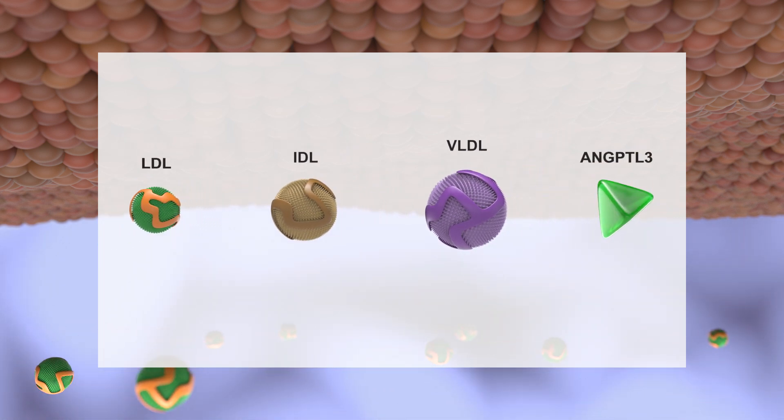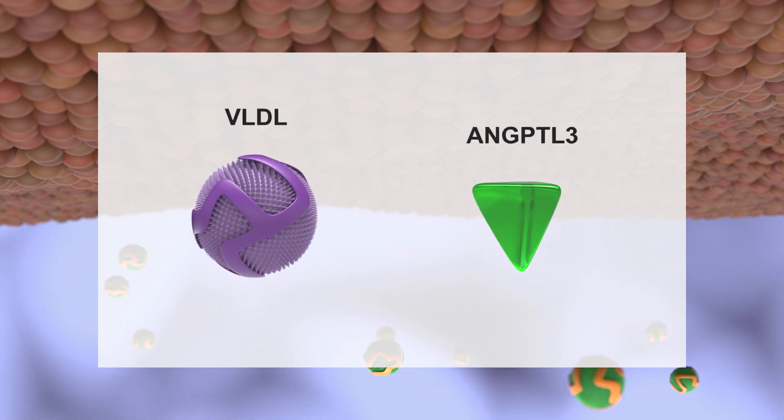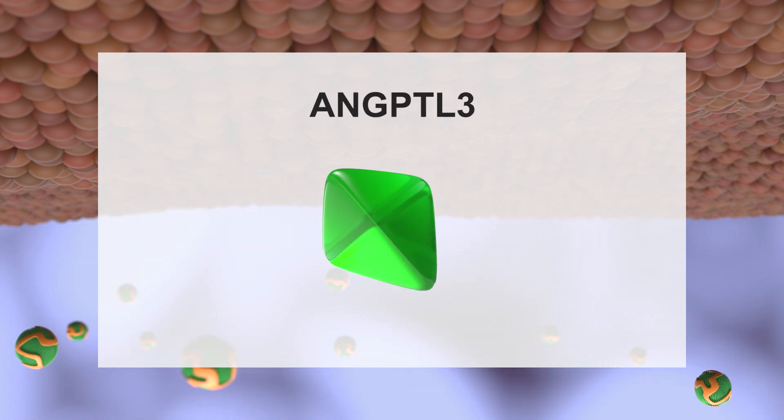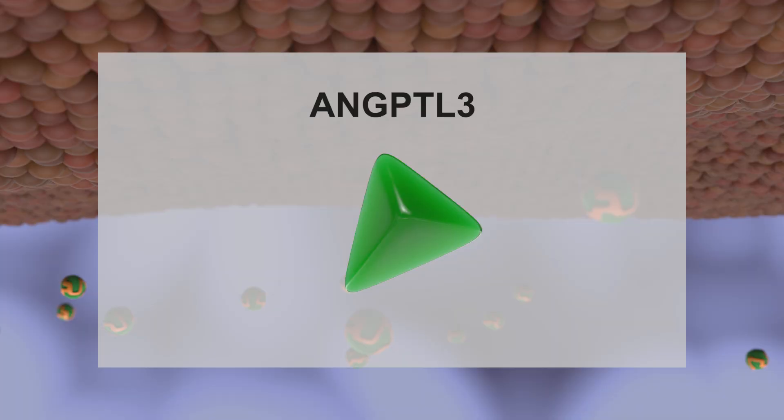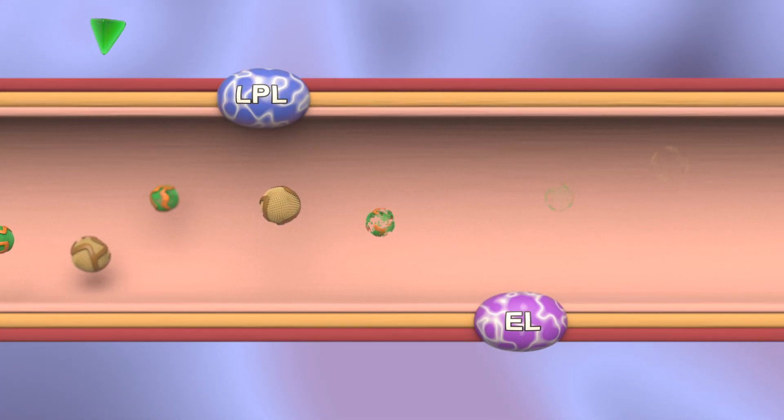Although the exact mechanisms are still being investigated, angiopoietin-like 3, or ANGPTL3, a glycoprotein produced by the liver, regulates hepatic secretion of triglyceride-rich lipoproteins.